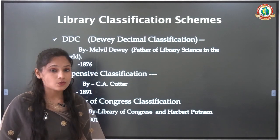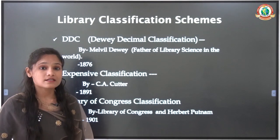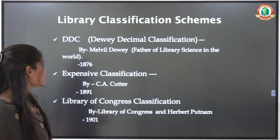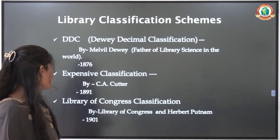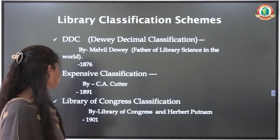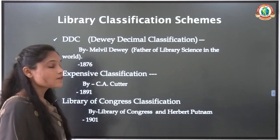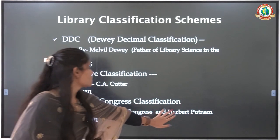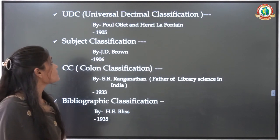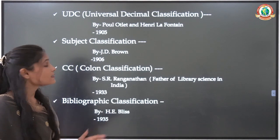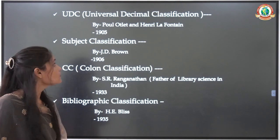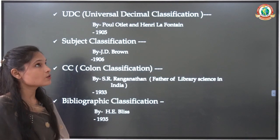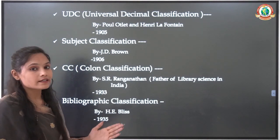Library classification has different schemes. First, DDC — Dewey Decimal Classification — by Melvil Dewey, who is the father of library science in the world; he gave the DDC scheme in 1876. Then Expansive Classification, provided by C.A. Cutter in 1891. Then Library of Congress Classification, given by Herbert Putnam in 1901. Now UDC — Universal Decimal Classification — given by Paul Otlet and Henri La Fontaine in 1905, after the founding of FID in 1895; they worked on UDC, which is based on the 5th edition of DDC.